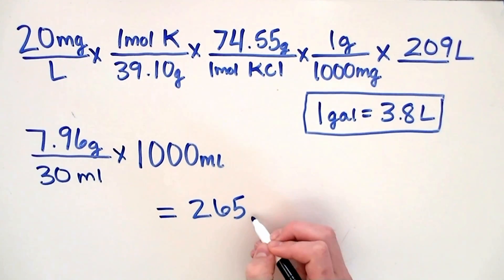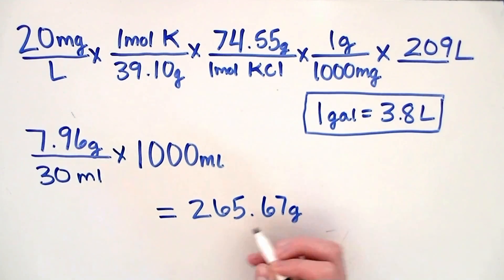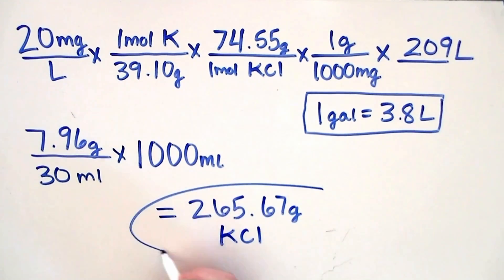When we do this calculation we end up getting 265.67 grams which is the amount of potassium chloride you need to add to your 1,000 mil container. Every time you extract 30 mils from this solution and add it to your aquarium you'll be dosing a concentration of 20 milligrams per liter.